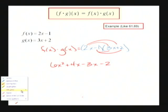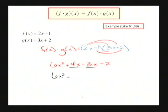And now, if I gather my like terms, I'll have 6x squared. 4 minus 3 is 1x minus 2. And that is f(x) times g(x). Cool? Cool.